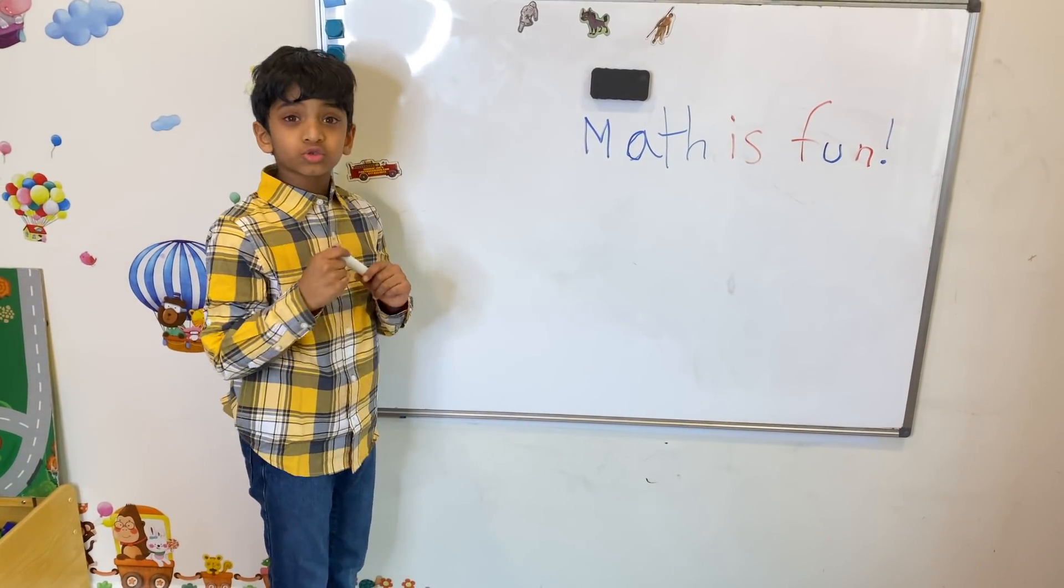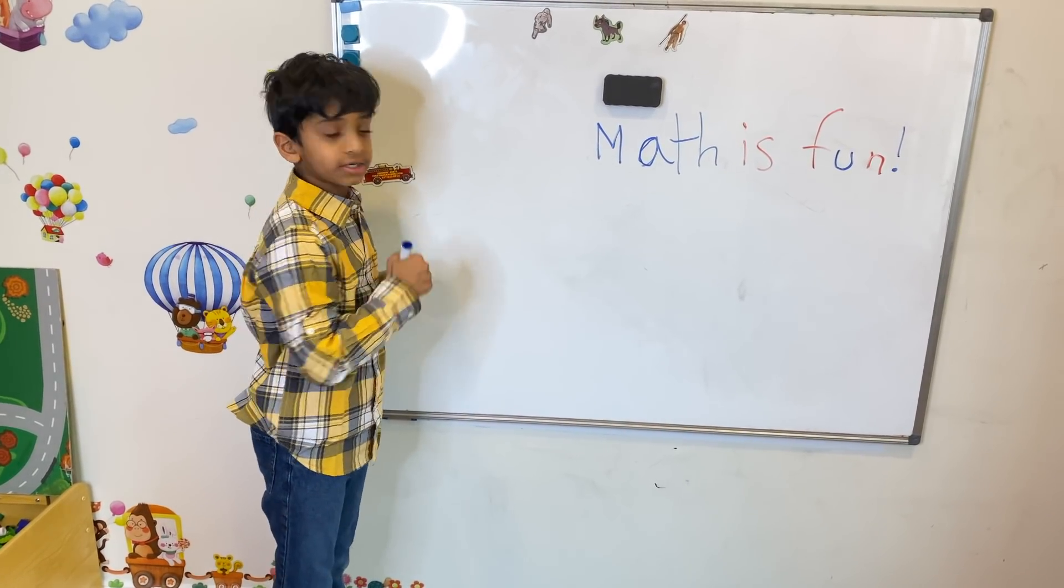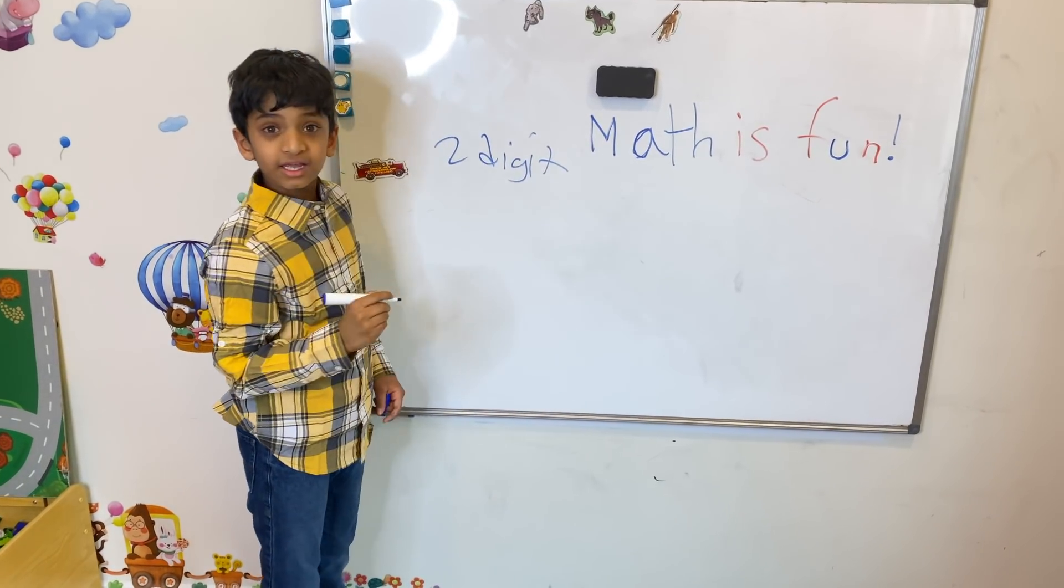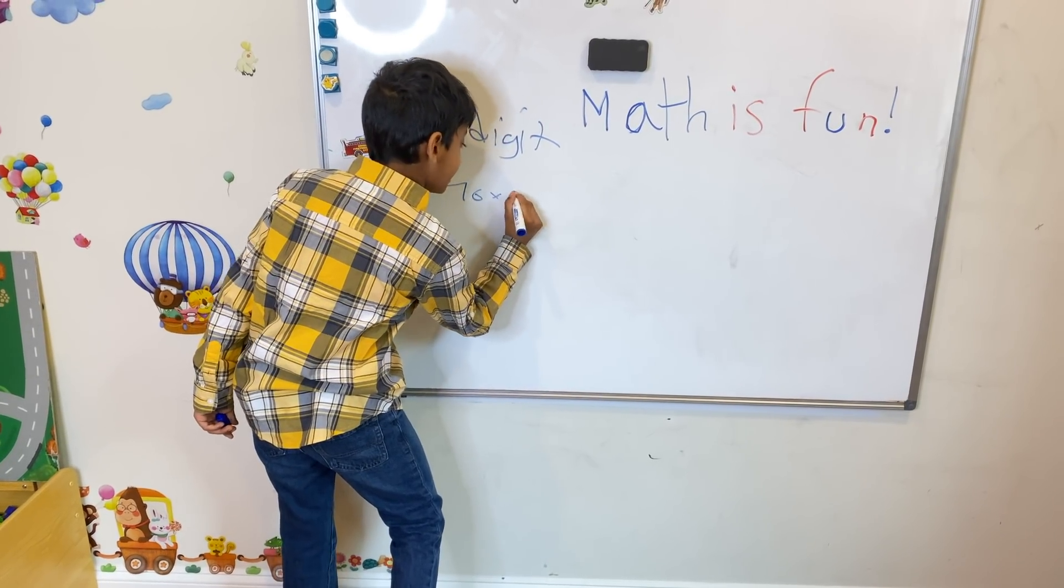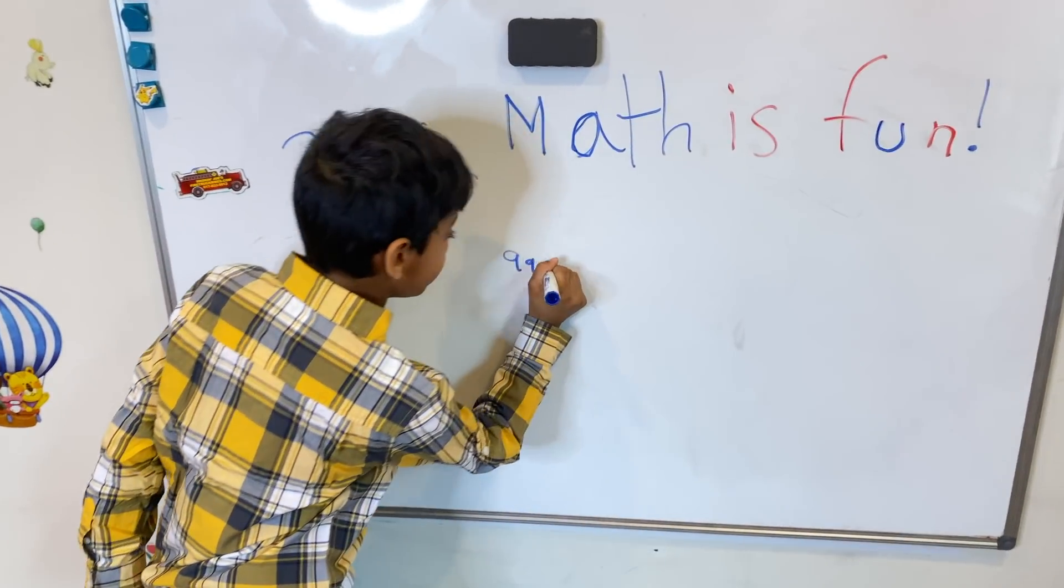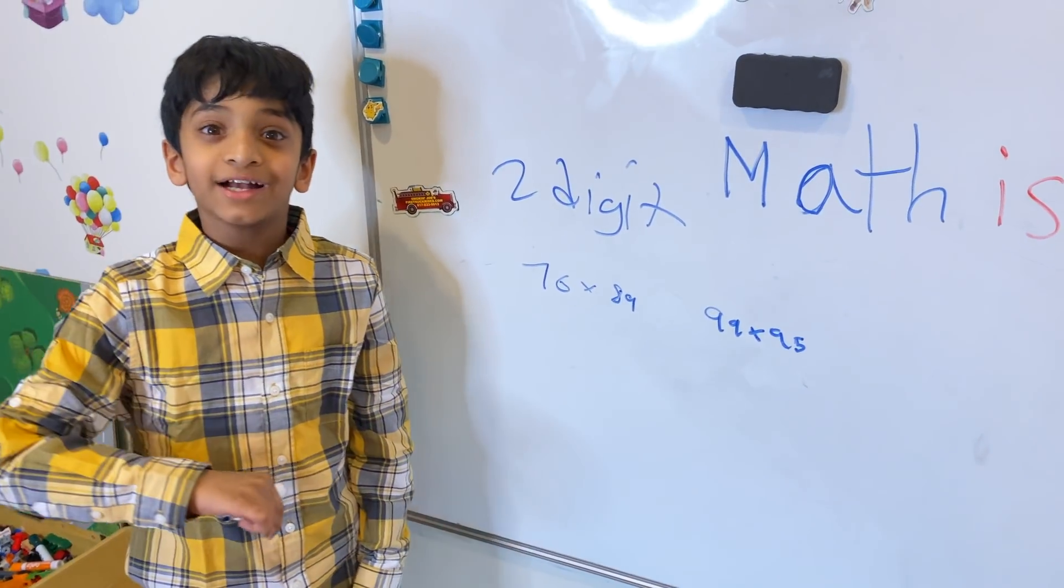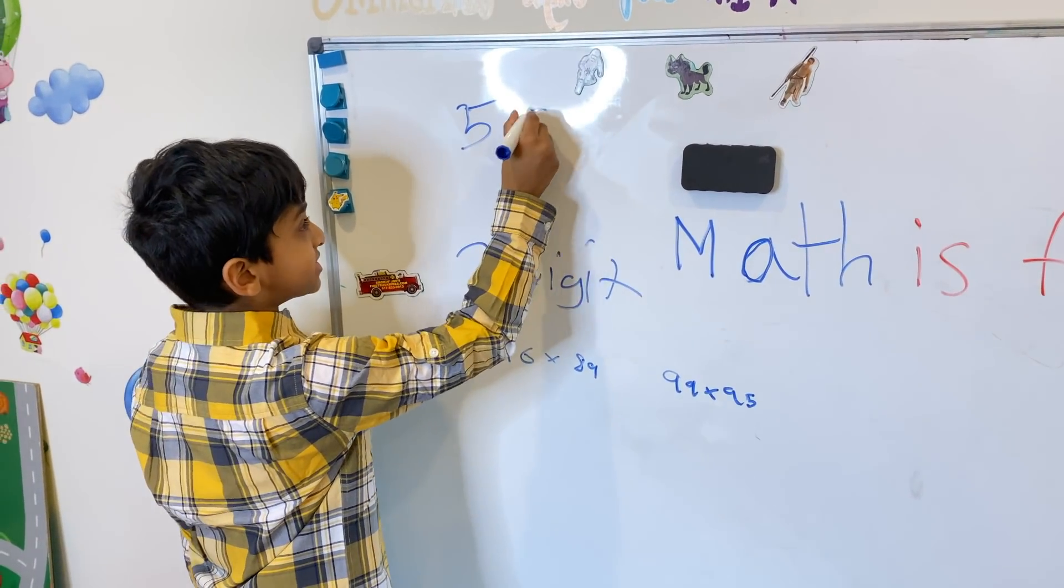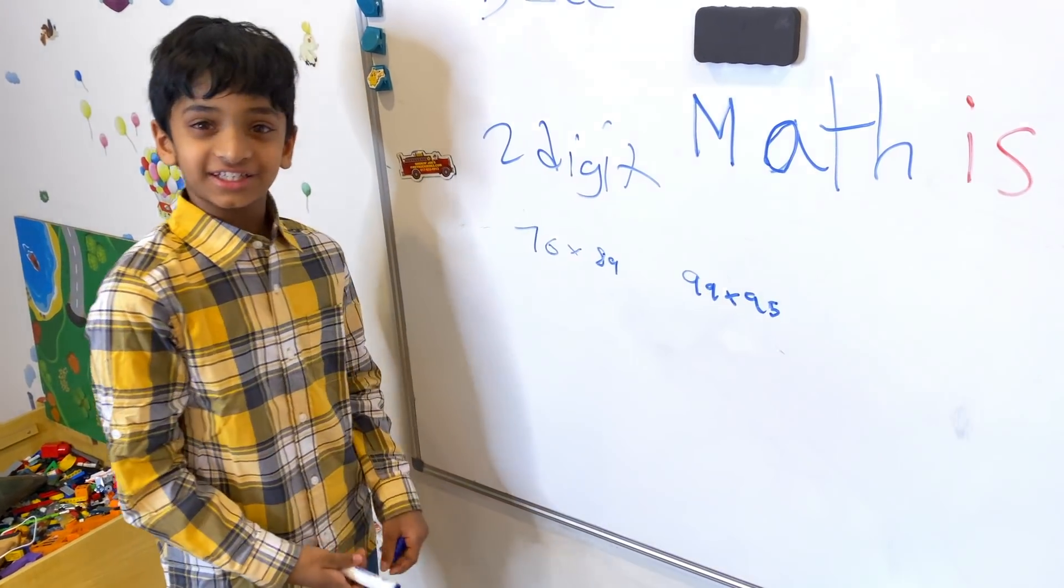I learned a really simple, cool math trick to do any two-digit multiplication in five seconds. Like 76 times 89 or maybe 99 times 95. These are some big multiplications, but I think you guys are falling off your chairs because you heard I said five seconds. So let's get started!